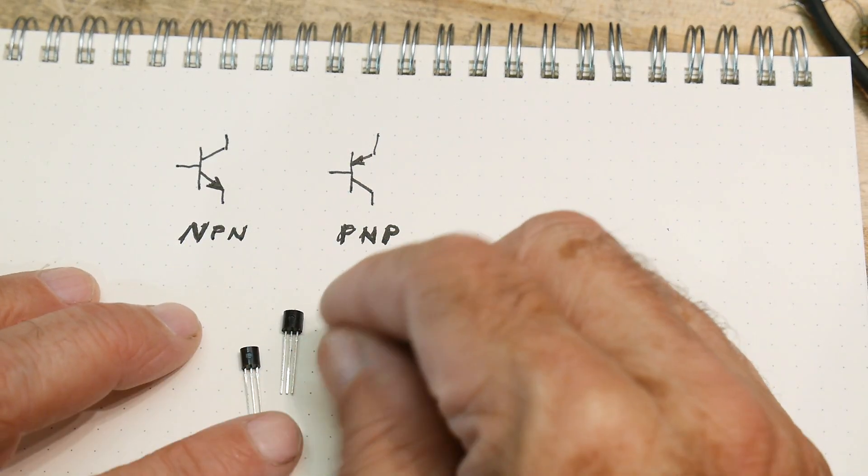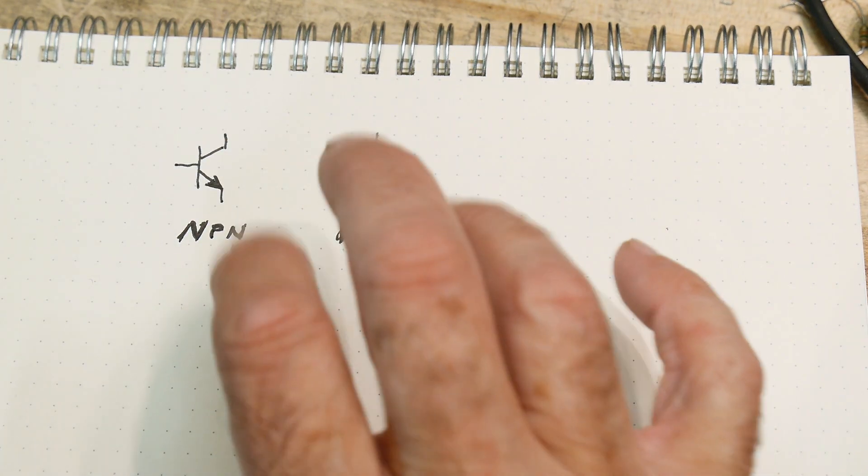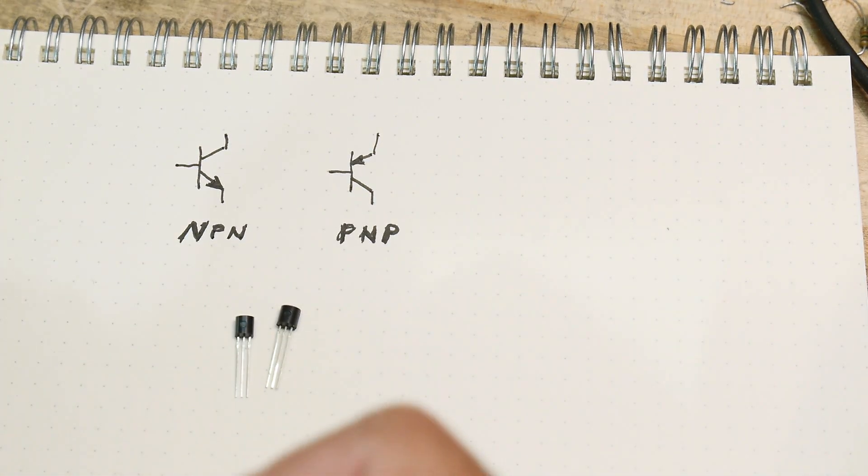Alright, I'm going to talk about some transistors today, in particular these bipolar transistors, NPN types and PNP types.